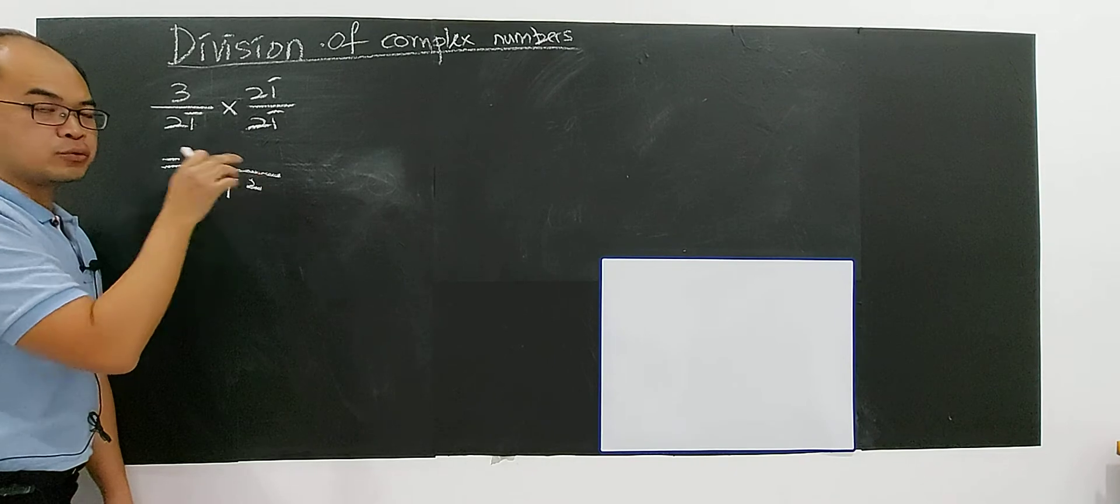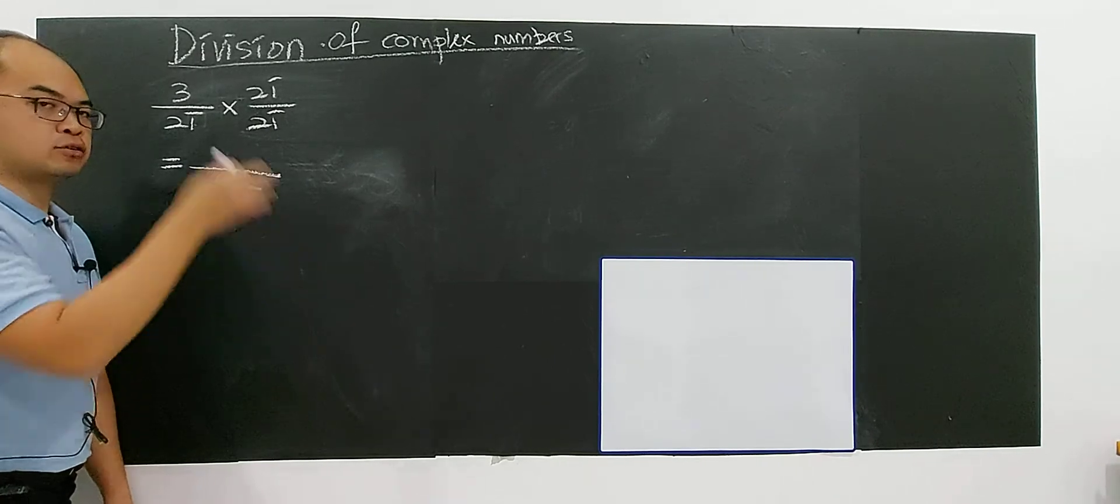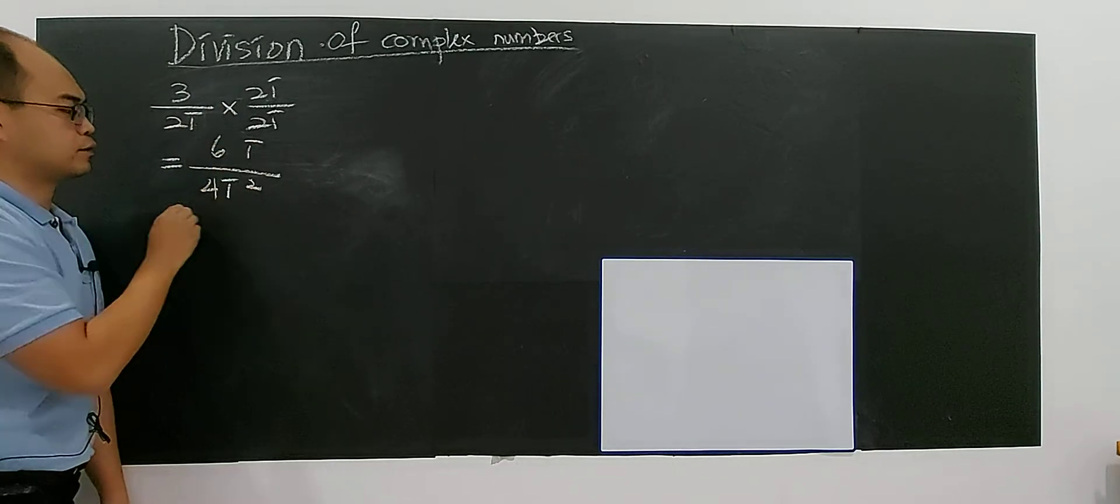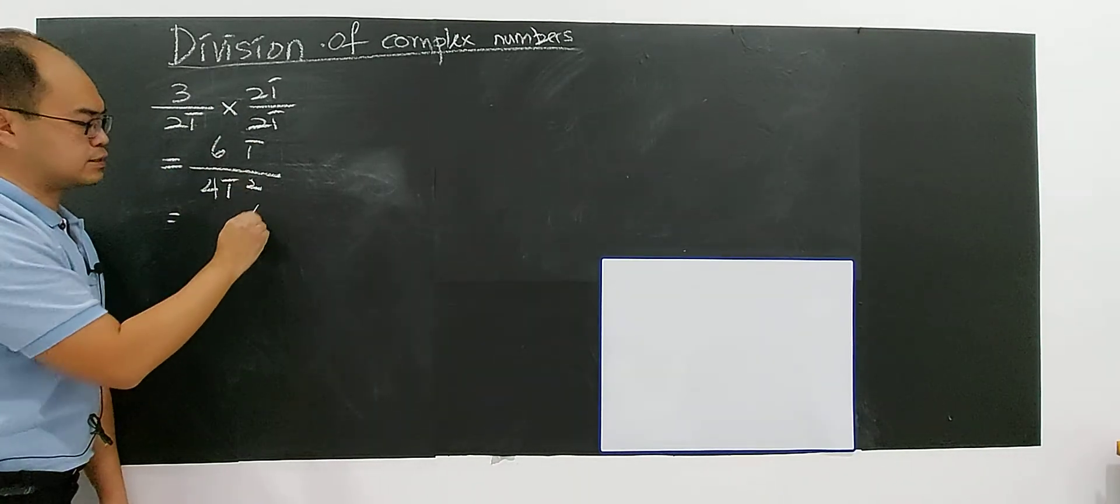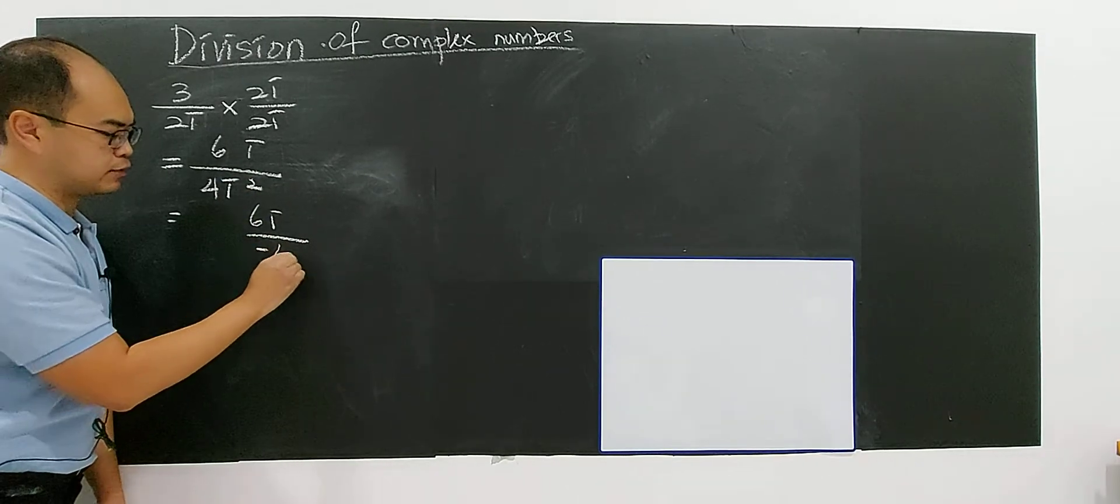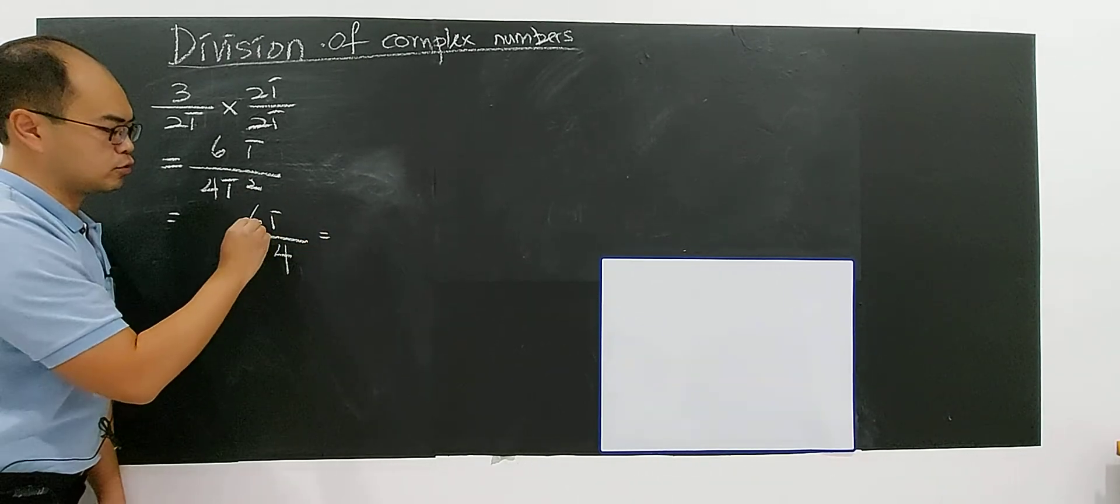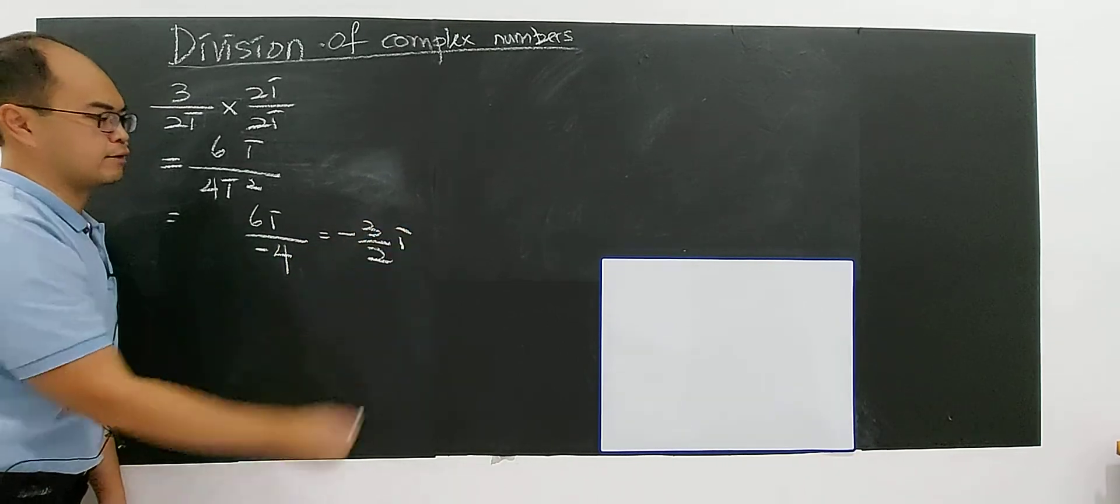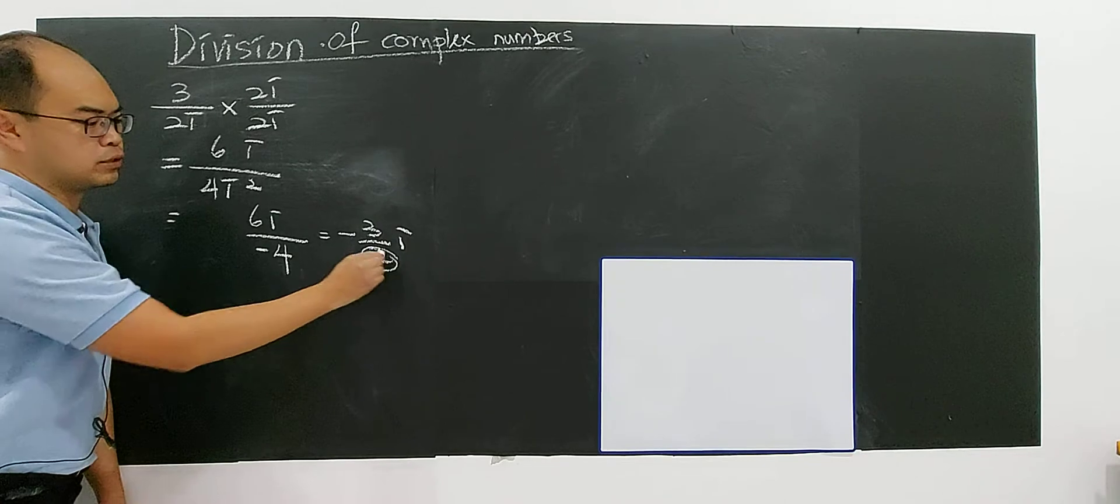You will get a real number. I talked about this in the previous video. 3 times 2 is 6i. So then you have 6i on top. i squared is what? i squared is negative 1, right? Negative 4.